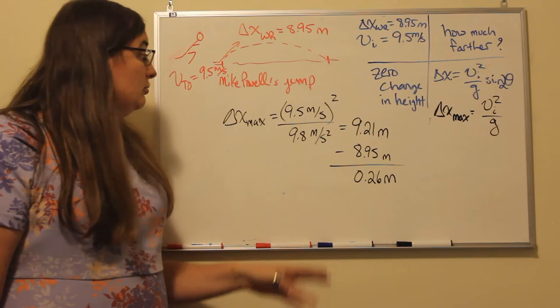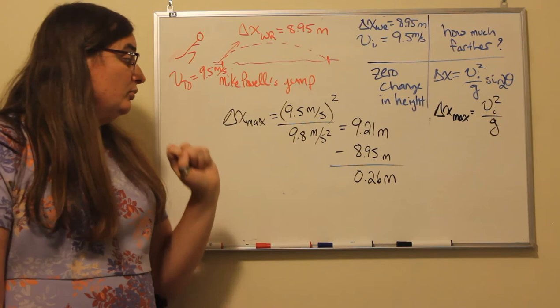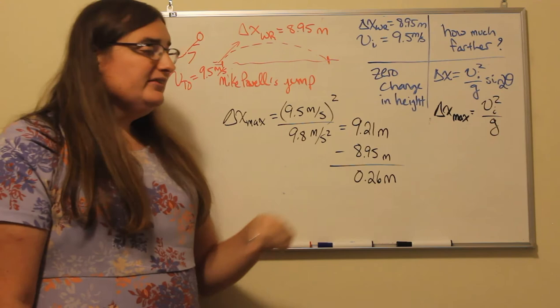We take our 9.5 meters per second, square that, divide that by 9.8 meters per second squared, and that leaves us with a distance of 9.21 meters.